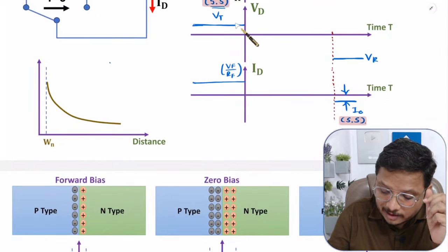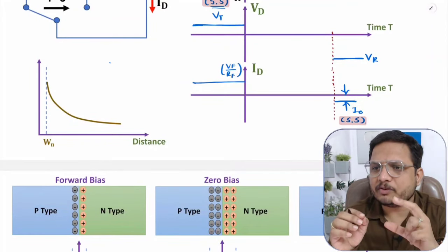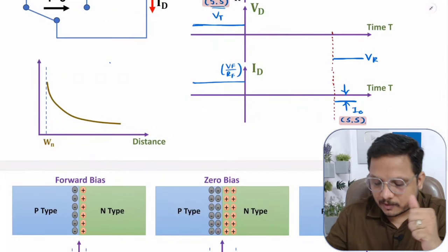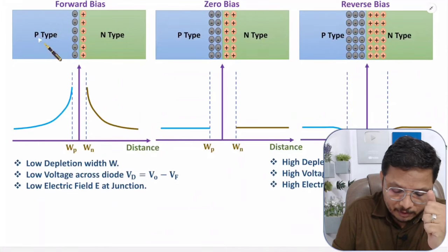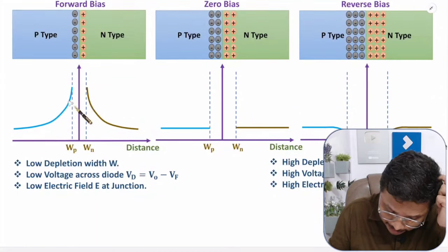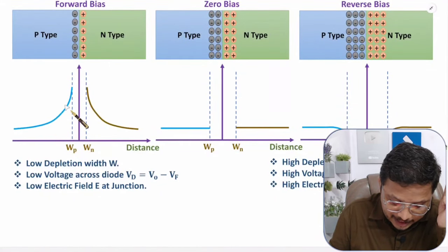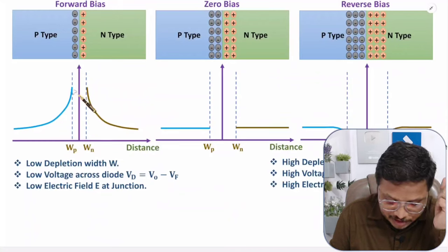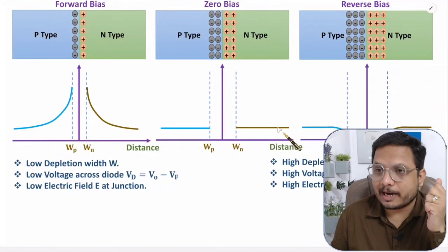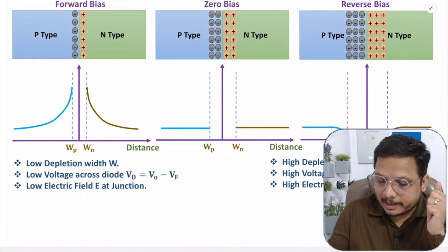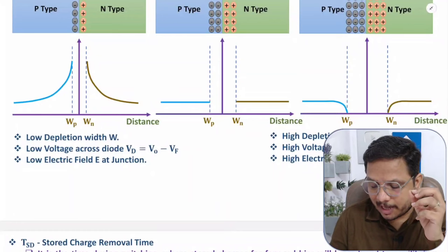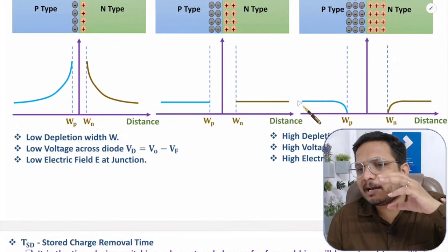To understand the transition, we need to understand how biasing affects minority carrier concentrations in the PN junction. In forward bias, minority carrier concentration — electrons in P-type and holes in N-type — increases exponentially near the depletion region and decreases as you move away. In zero bias, it is uniform. In reverse bias, concentration near the depletion region is almost zero and rises toward equilibrium as you move away.